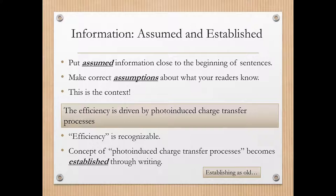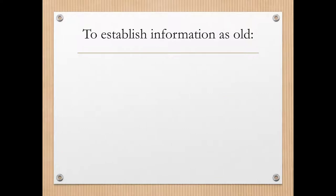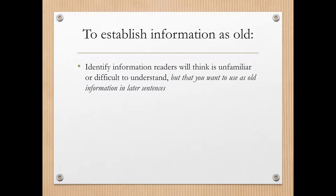I want to talk a little bit more about this idea of establishing new information — establishing it as old information so that we can move forward in our writing. In order to establish information as old, we're going to provide information to the reader that they don't already know, but we're going to set it up as if it were familiar to them. We think about the information that readers will find unfamiliar or difficult to understand, but that we want to use as old information in later sentences. Often this might be the point topic for a particular paragraph. In our example, we're going to consider this to be photo-induced charge transfer processes — that is the information we want to use again and again, establishing it as old information for our readers.